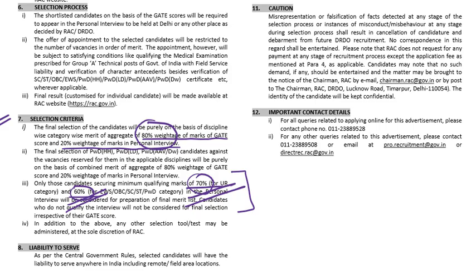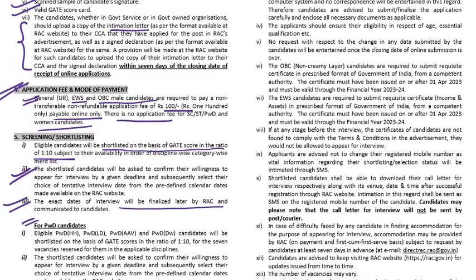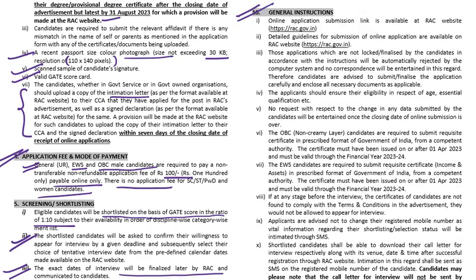All other instructions can be read at the RAC website where the link is available. Detailed guidelines to fill the application form are also available there. The last date is 21 days from the date of activation of the online registration link at the RAC website.